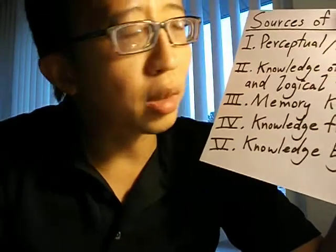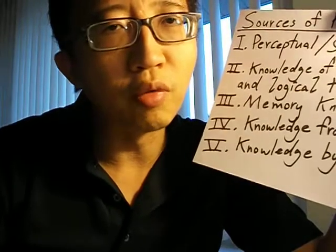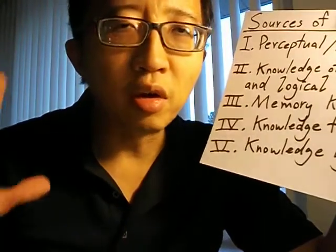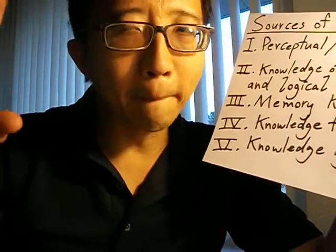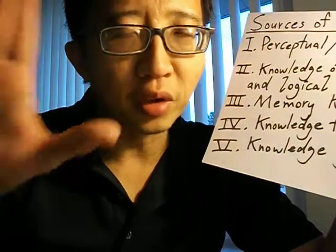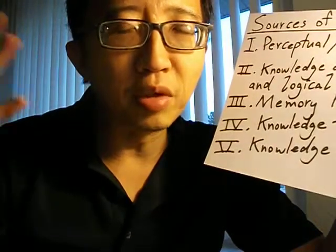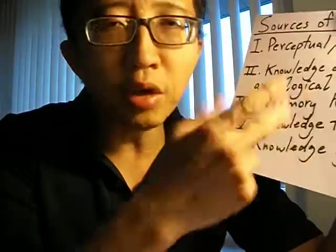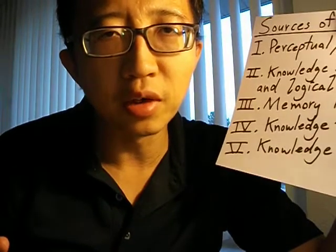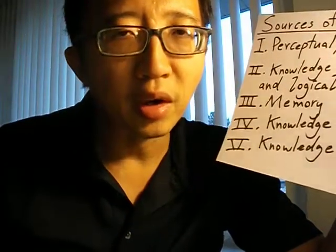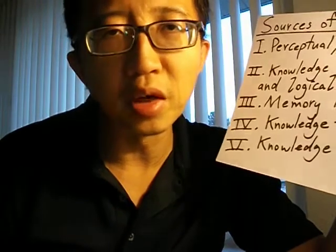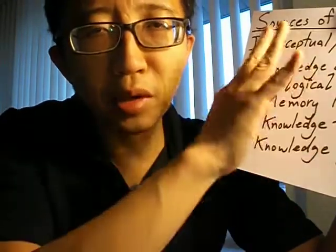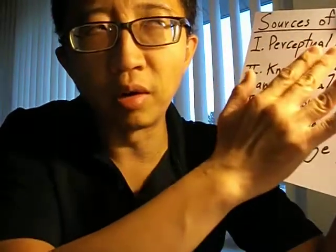The first source is sensory or perceptual knowledge. As the name suggests, sensory knowledge refers to knowledge of things that we get through our five senses. For example, if I look out my window right now and I see a tree with green leaves, the knowledge that there is a tree with green leaves outside my window is a piece of knowledge I get through my senses. It is obvious that a lot of our knowledge comes to us through our five senses — hearing, smell, and so on all count as perceptual knowledge.